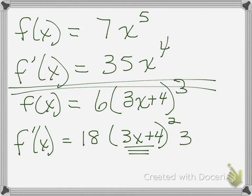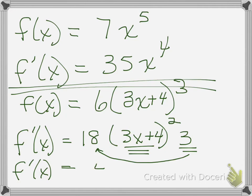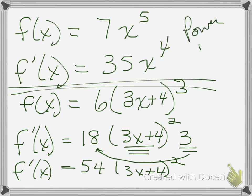So doing the chain rule, that's how you're getting this factor of 3. Now let's clean it all up. f prime of x equals — multiply the 3 by the 18 to get 54 — and then we have (3x plus 4) squared. So we've gone over power rule, and this is power plus chain.